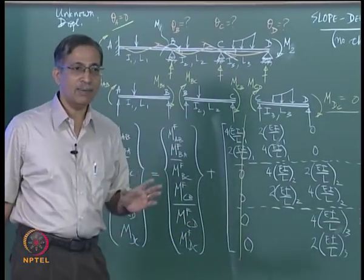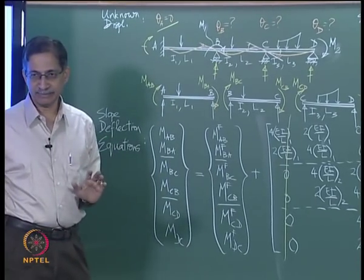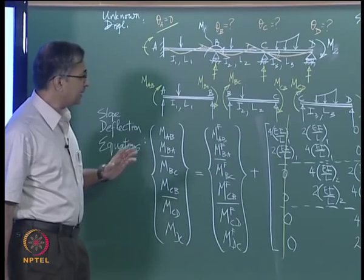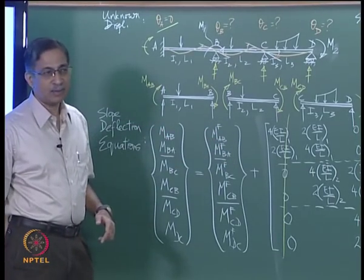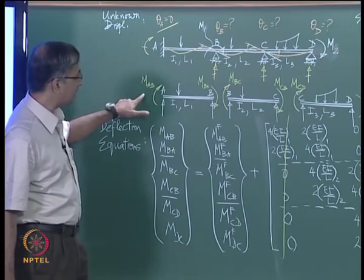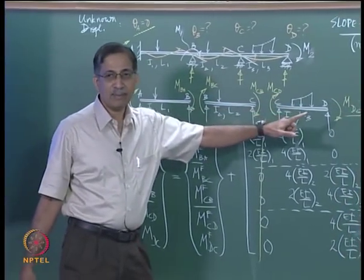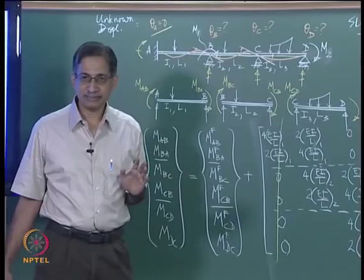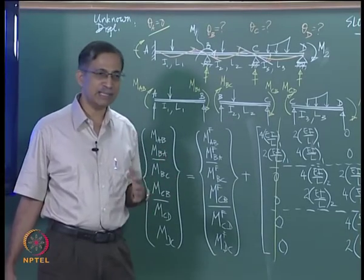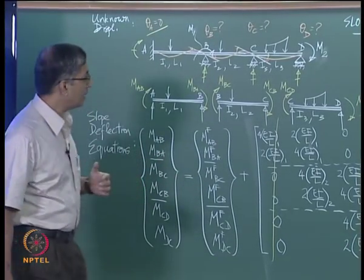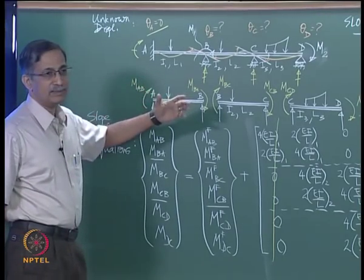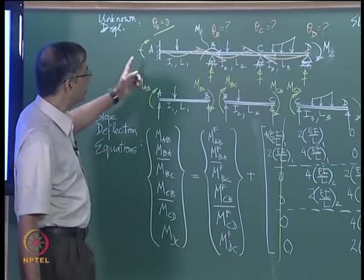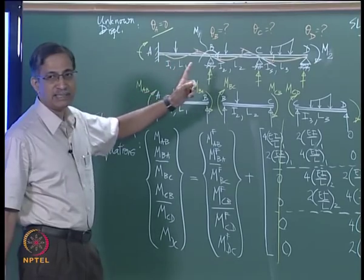Our real objective is to be able to draw the bending moment diagram and the shear force diagram. In the displacement method of analysis, we try to get to know these moments by relating them to displacements — that is why it is called a displacement method. What are the unknown displacements? We need to worry only about displacements at the joints. There are four joints in this example: A, B, C, and D.